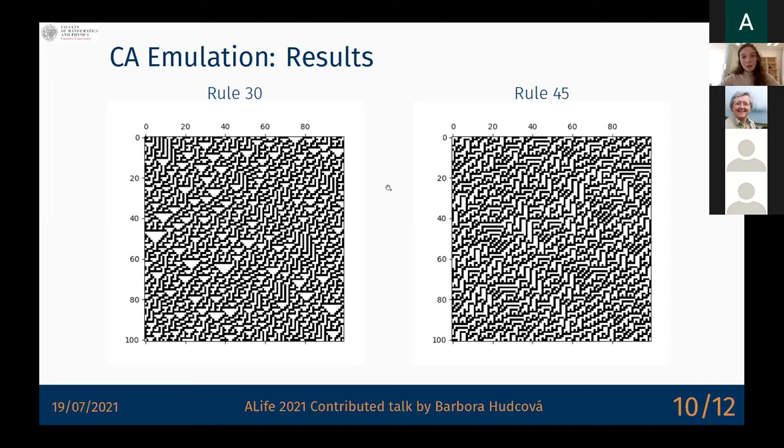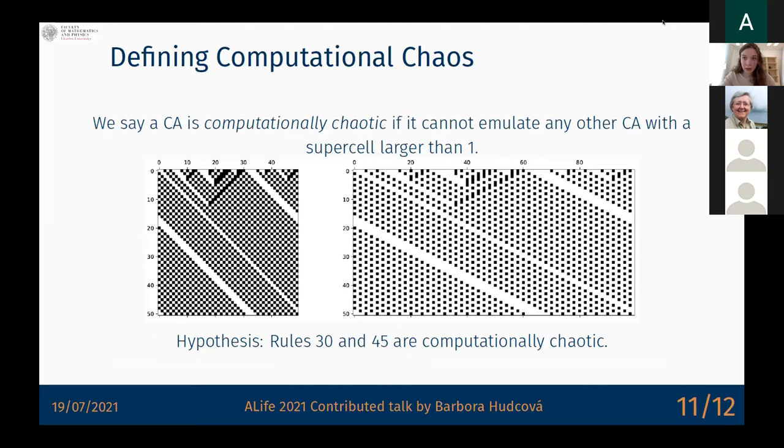In some sense, it seems that the most chaotic CAs are the ones unable to emulate any other CA, so in some sense unable to do any computation. Now this seemed exciting because it is a very interesting ongoing debate whether chaotic CA can do any computation. They seem to be better for reservoir computing, but we are unable to embed Turing machines inside them because we see no structures forming. This is another experimental result supporting the intuition that maybe they are not able to compute anything because they cannot emulate any other rule, even a constant rule.